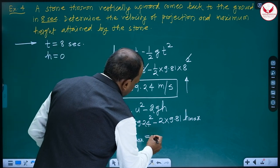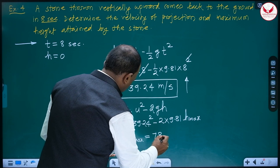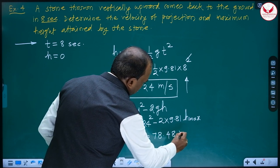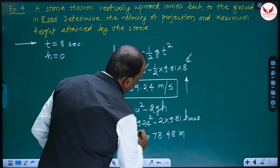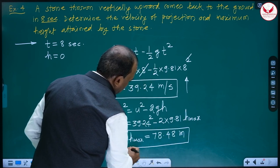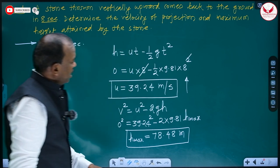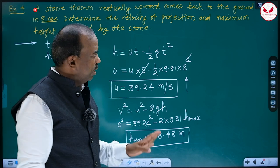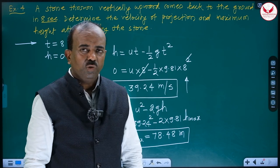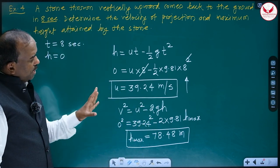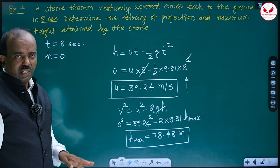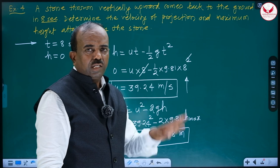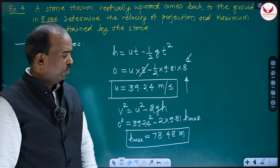h_max = 78.48 meters. So with a projection velocity of 39.24 m/s, the stone reaches a maximum height of 78.48 meters and returns to the ground in 8 seconds. In summary, for constant acceleration problems, only these three kinematic equations are needed: when motion is upward, g is negative; when downward, g is positive.